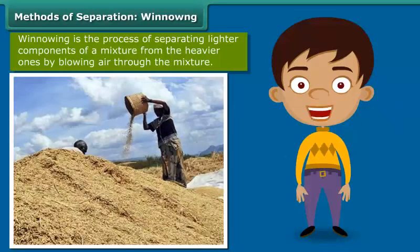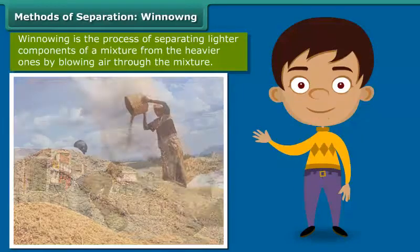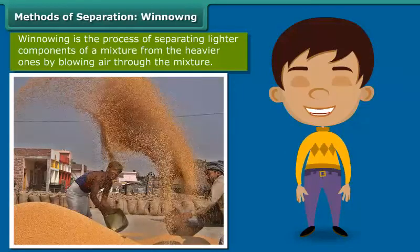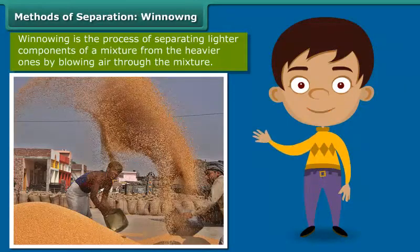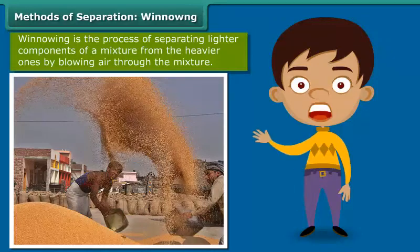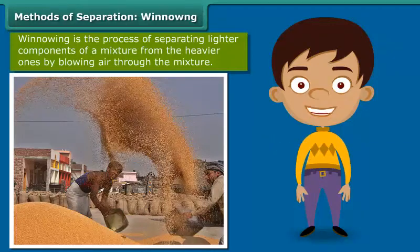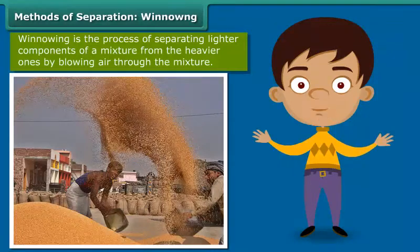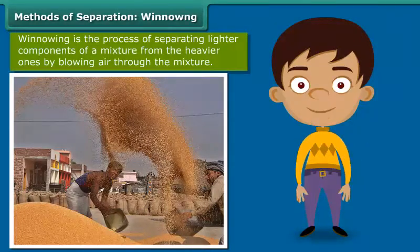The heavier grain falls down in a heap. This process of separating impurities from the grain by allowing a current of air to blow away the lighter impurities is known as winnowing.